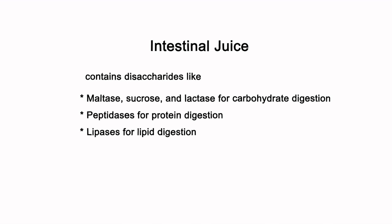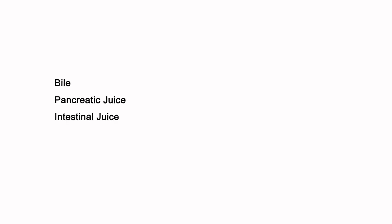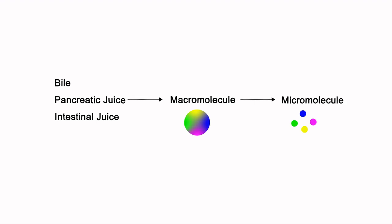Additionally, the intestinal juice also contains mucus, which helps lubricate the walls and facilitate regrowth of epithelial cells. All the enzymes released by the three juices together break down the macromolecules into small, absorbable molecules.